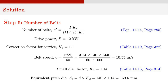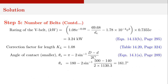To find the equivalent pitch diameter, we need the small diameter factor KD, obtained from table 14.15 on page 314, giving KD as 1.14. Therefore, the equivalent pitch diameter DE equals d times KD, that is 140 times 1.14, equaling 159.6 millimeters. The belt power rating KW is found from equation 14.13B on page 295: KW equals [1.08 times B raised to minus 0.09 minus 69.68 divided by DE minus 1.78 times 10 raised to minus 4 times B squared] multiplied by 0.7355 times B. Substituting values of B and DE, we get KW as 3.24 kilowatts.